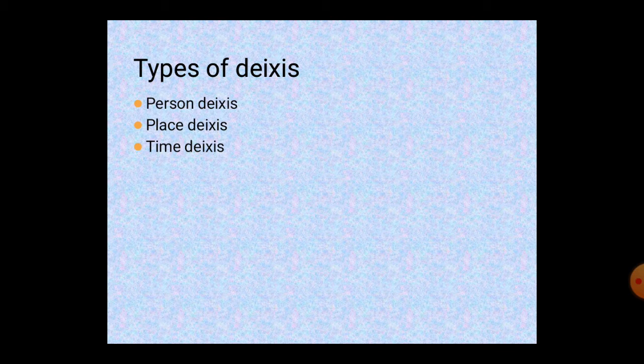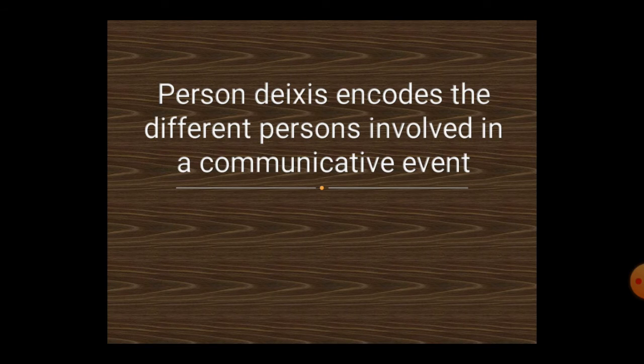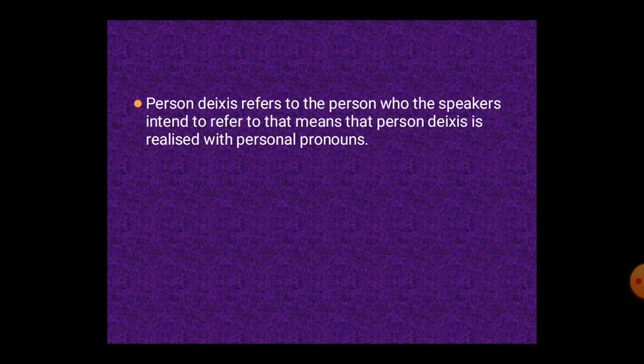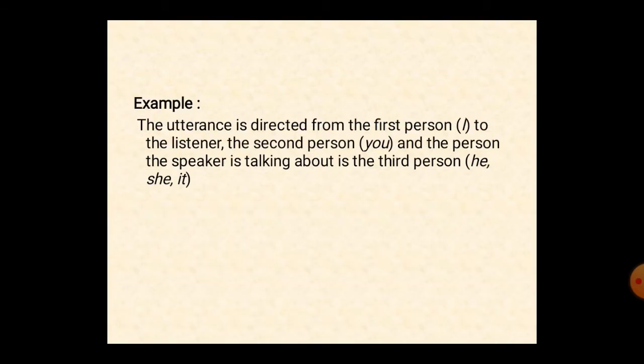This is the definition of person deixis. Person deixis encodes the different persons involved in a communicative event. Person deixis refers to the person who the speaker intends to refer to. This means person deixis is realized with personal pronouns. For example, the utterance is directed from the first person 'I' to the listener, the second person 'you', and the person the speaker is talking about is the third person 'he', 'she', or 'it'.